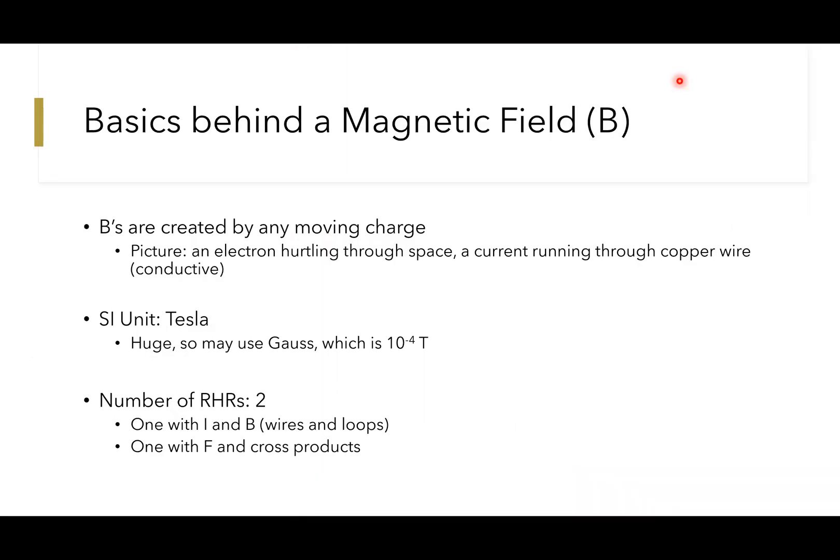Let's start with the basics of a magnetic field, abbreviation B. Magnetic fields are created by any moving charge. Picture a single charge, an electron or proton hurtling through space, or a collection of charges called a current. A current can run through any sort of conductive material, such as a copper wire, which is a common situation you'll find.